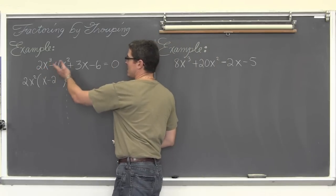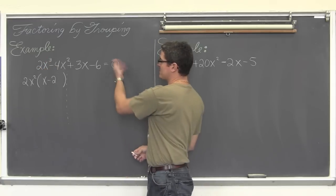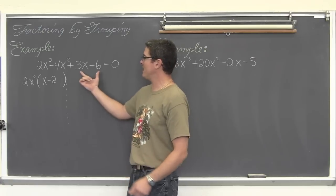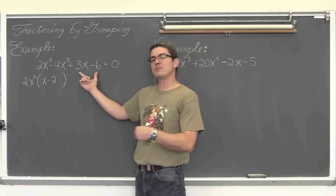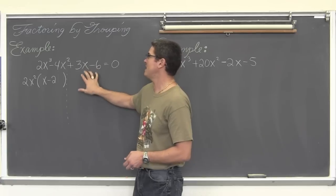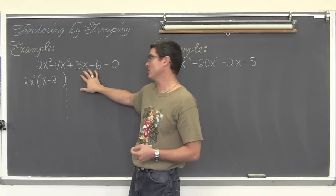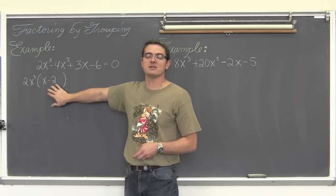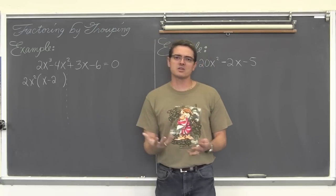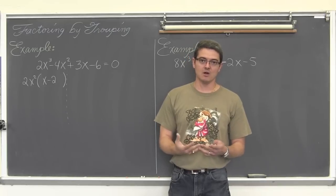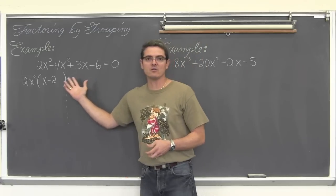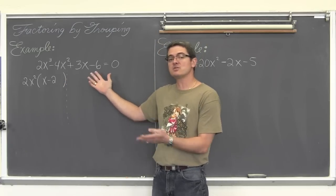Now, this four-term expression — or this equation set equal to zero — if it is truly factorable by grouping, then I need to be able to factor out something from the last two terms and I need this x minus 2 to show up again. If I cannot take a common factor out of the last two terms and make x minus 2 show up again, then either I have made a mistake — certainly if you are in a textbook section on factoring by grouping — or in a higher level class, maybe it just does not factor by grouping.